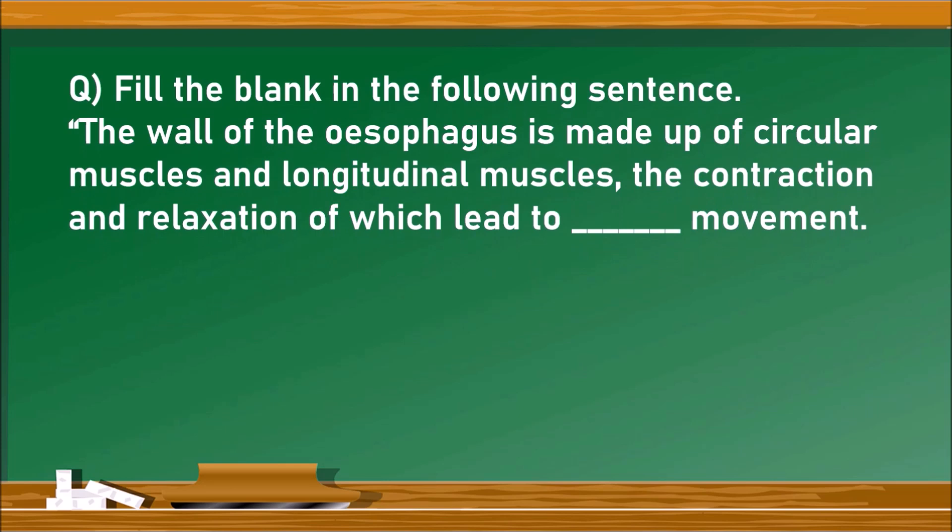Next question. Fill the blank in the following sentence. The wall of the esophagus is made of circular muscles and longitudinal muscles. The contraction and relaxation of which lead to dash movement. That is peristaltic movement.